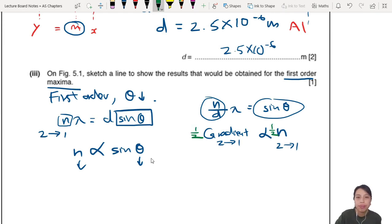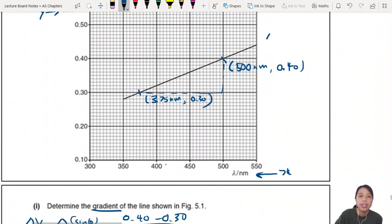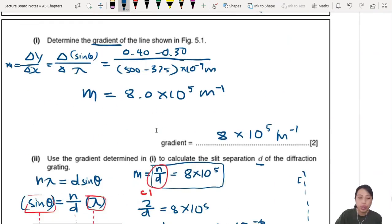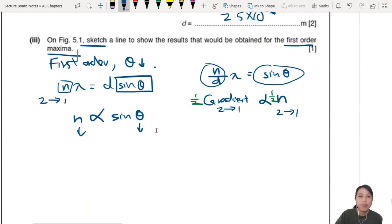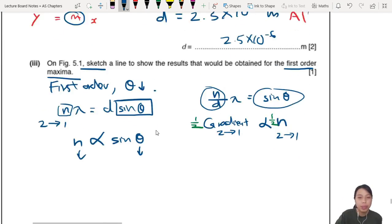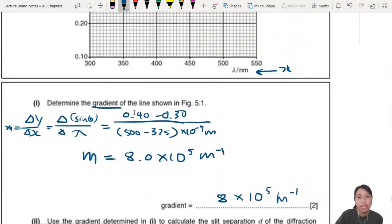So you can sketch here - they say sketch, so if you roughly draw a line that's less steep than this first line, then you're correct already. First mark. Now this part, the mark scheme will say if you draw a reasonably good line, then okay already. But what is a reasonably good line? If examiner is strict, then they will see whether it's acceptable or not. So maybe it's good to also take some points, calculate your gradient.